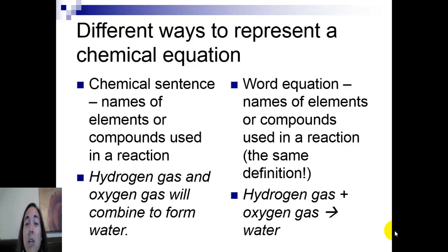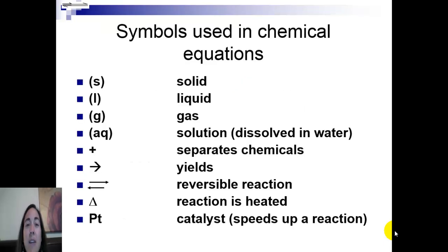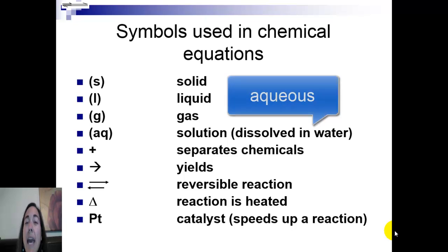Speaking of symbols, in order to write a good chemical equation or a word sentence, you are going to have to know the symbols that are used in chemical reactions. Let's take a look at those. The first four symbols I want you to know about are just phase symbols: S for solid, L for liquid, G for gas, and the fourth one here is AQ, which is aqueous. It's just a solution or a substance that's dissolved in water.